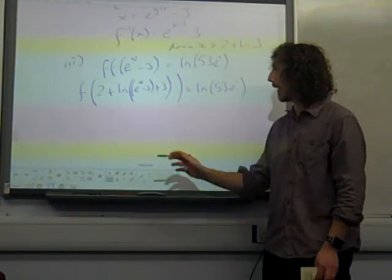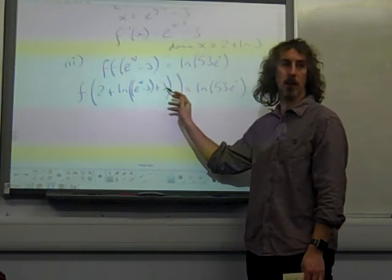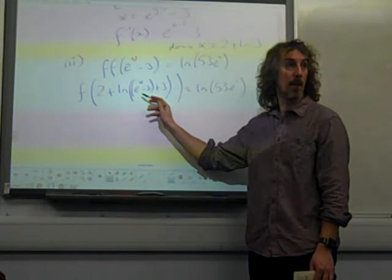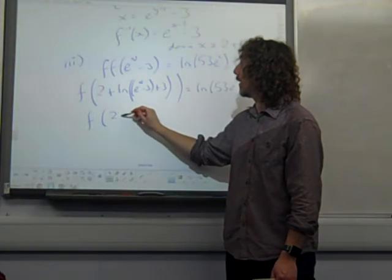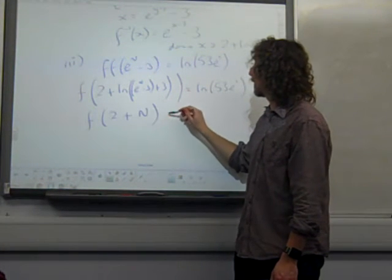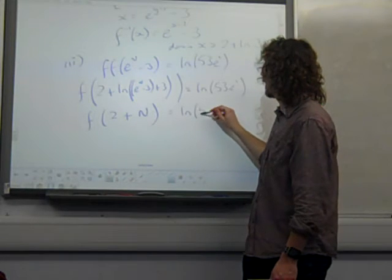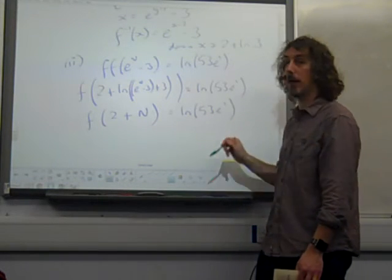Now if I unpick my brackets that are going on here, I've got e to the n minus 3 plus 3. So that's e to the n. So actually I've got ln e to the n. So this is f of 2 plus n, equals ln 53 e squared.